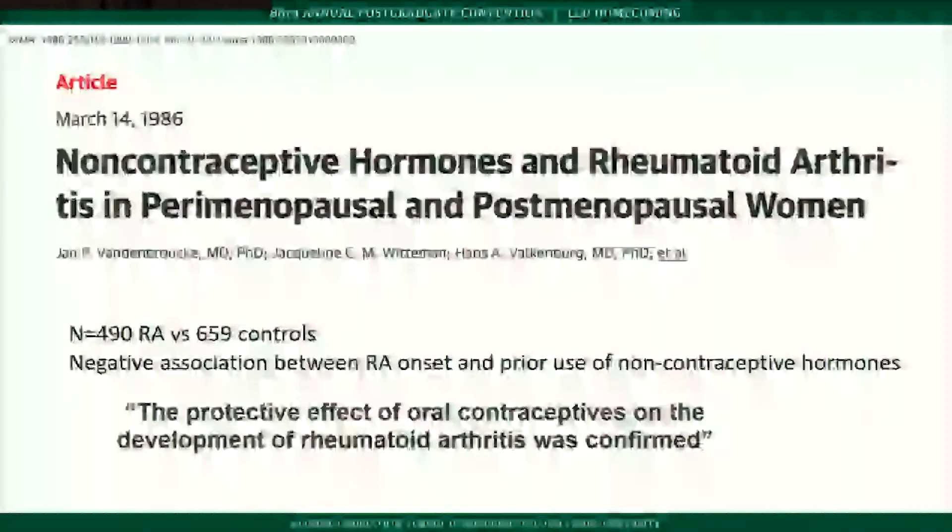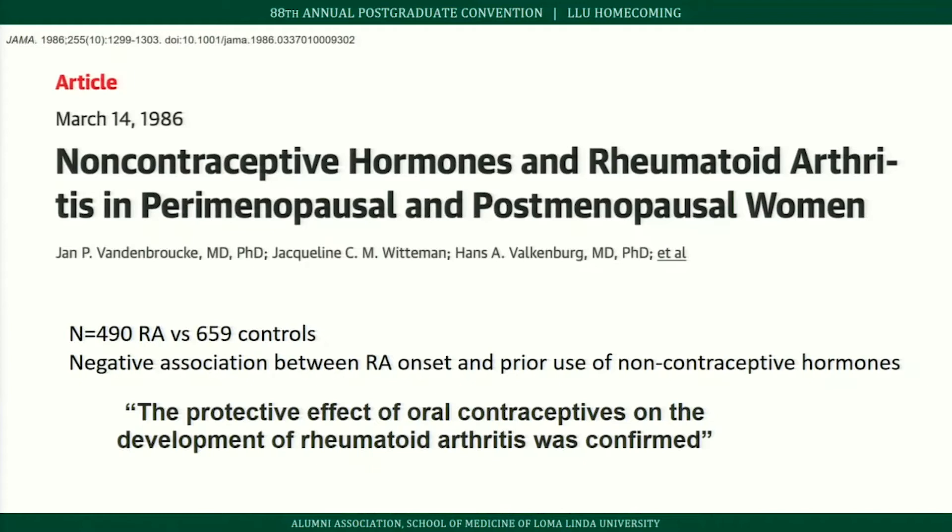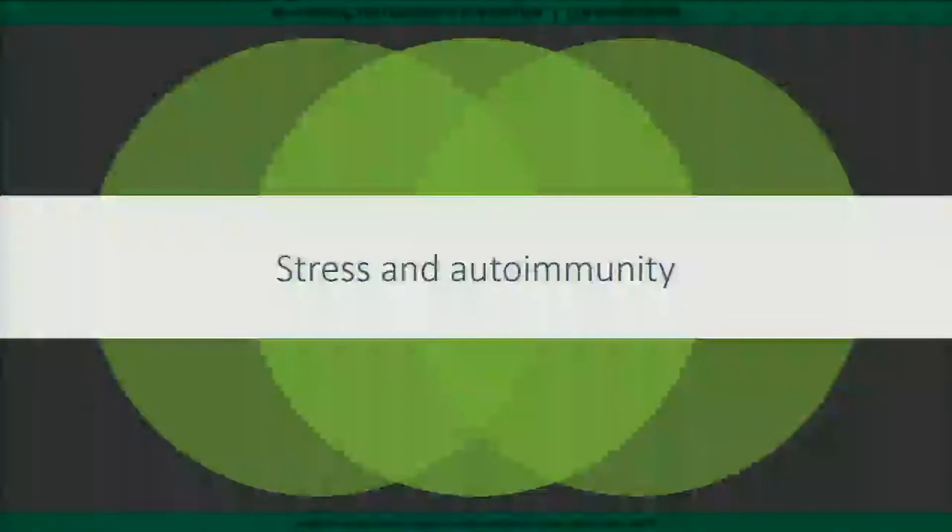A 1986 JAMA article examined non-contraceptive and contraceptive hormones in perimenopausal and postmenopausal women with RA. No association was found between RA onset and prior use of non-contraceptive hormones, but oral contraceptives appeared to have a protective effect on the development of RA — research that helped trigger much of the subsequent work in this field.